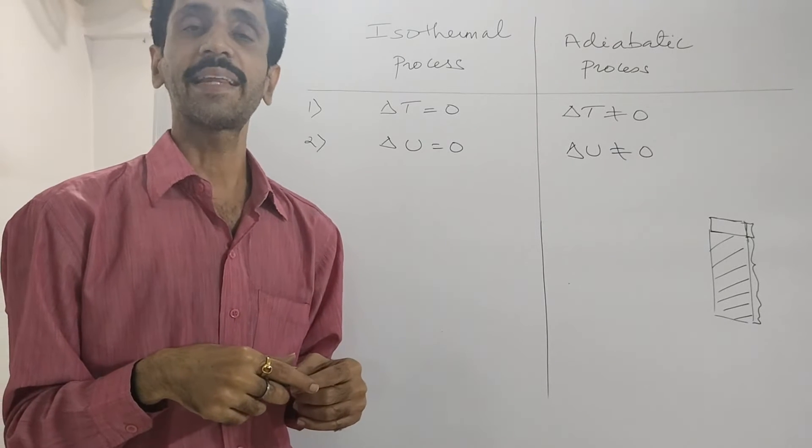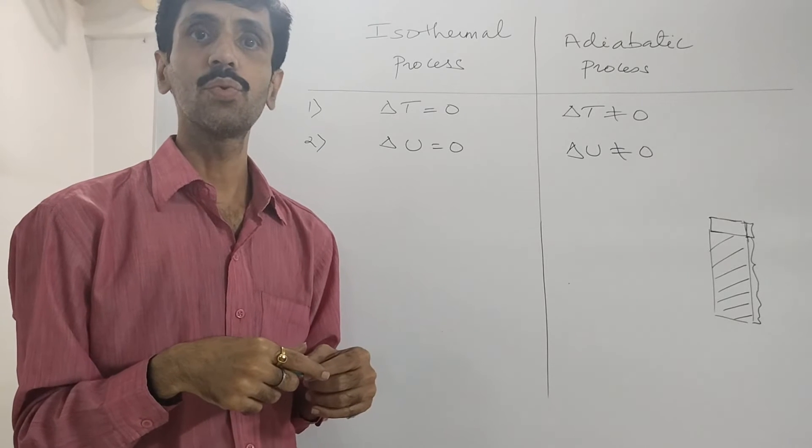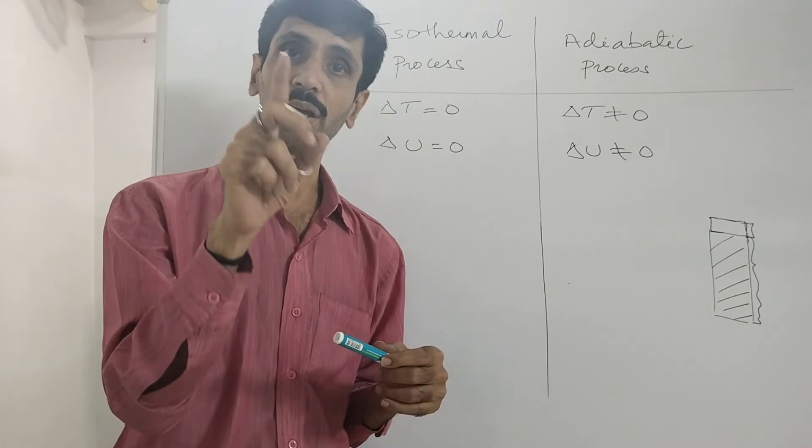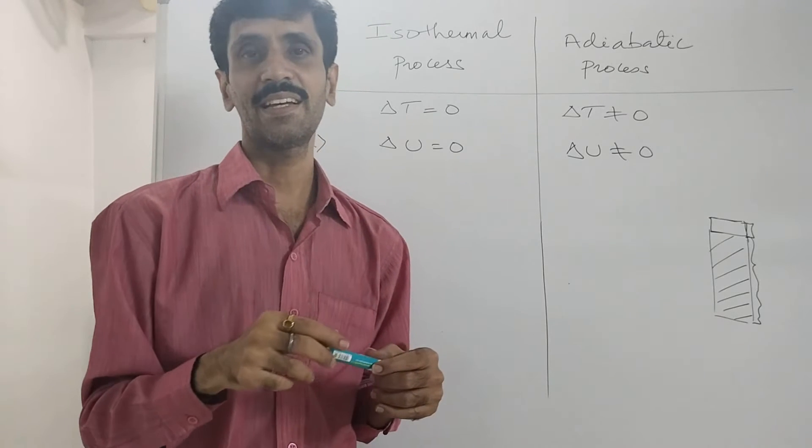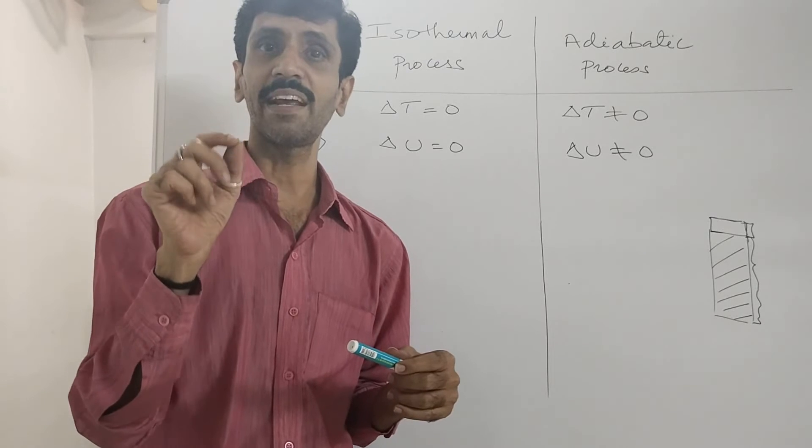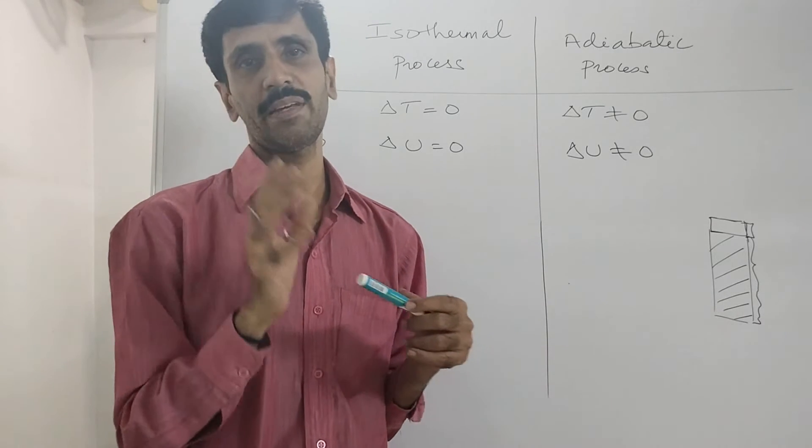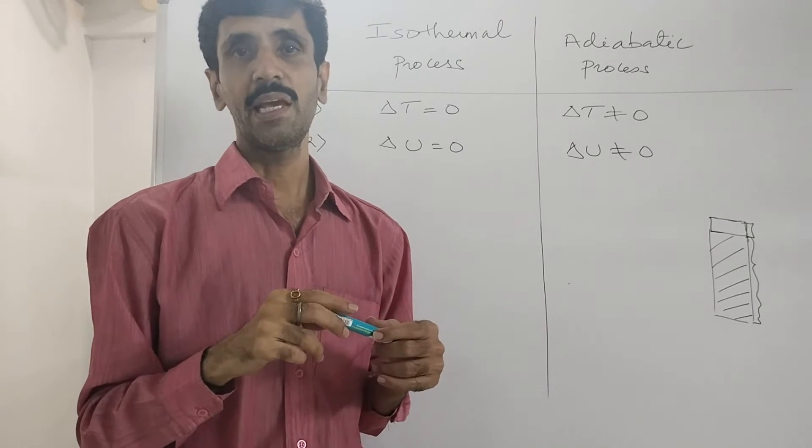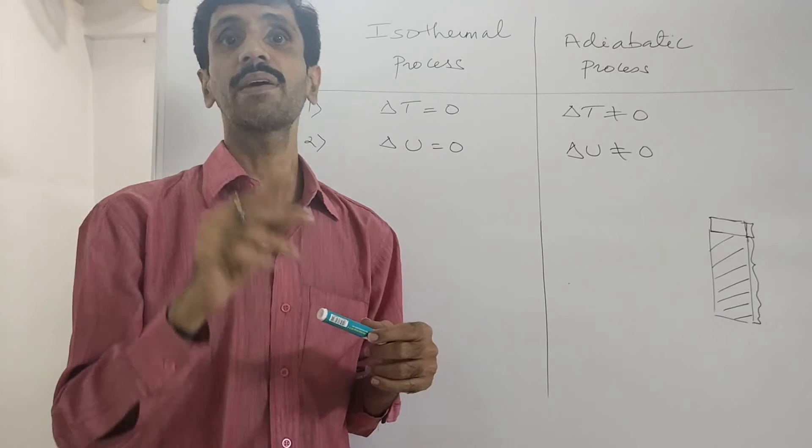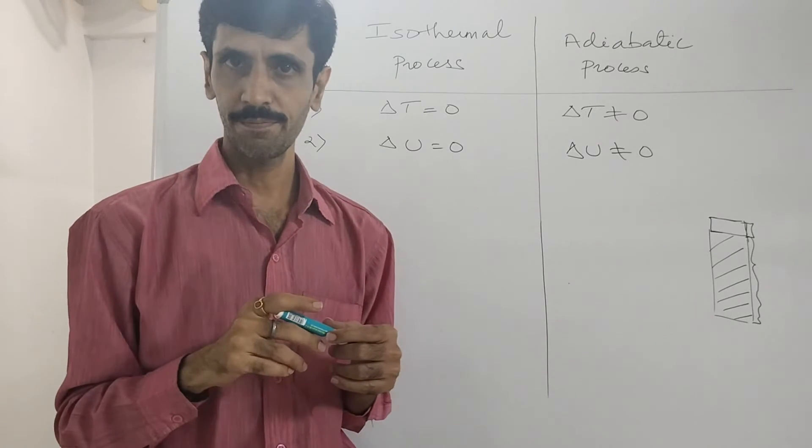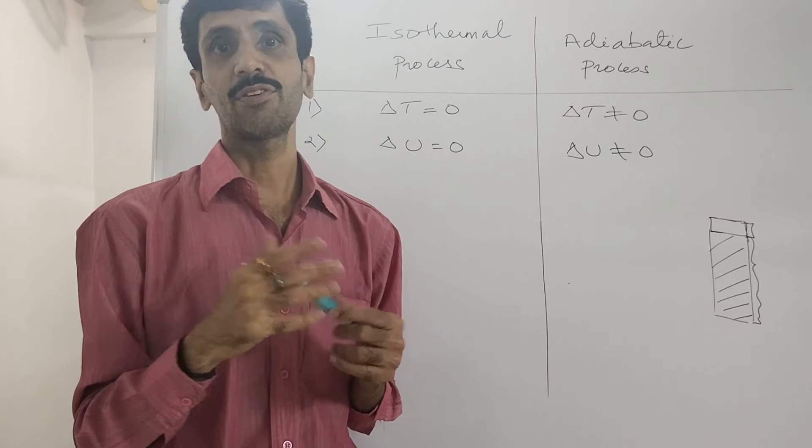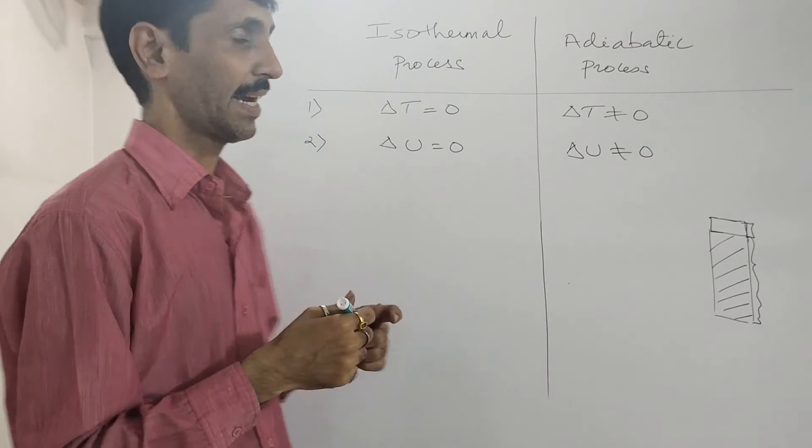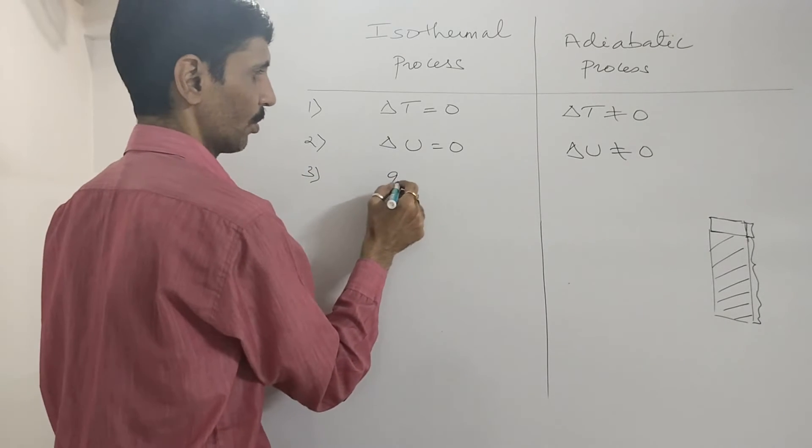Next thing is point number three and that is flow of heat, denoted as Q. If you can think that in an isothermal process, for the temperature to remain constant the flow of heat is necessary. Now in which direction that depends upon whether it is an exothermic reaction or whether it is an endothermic reaction. If it is exothermic the flow of heat takes place from the system to the surrounding. If it is endothermic it will go from the surrounding to the system but there is an exchange of heat taking place.